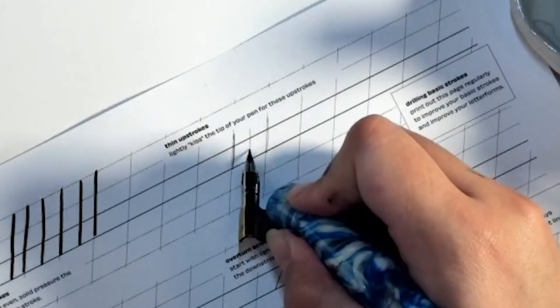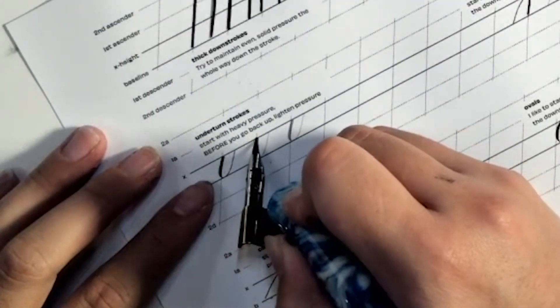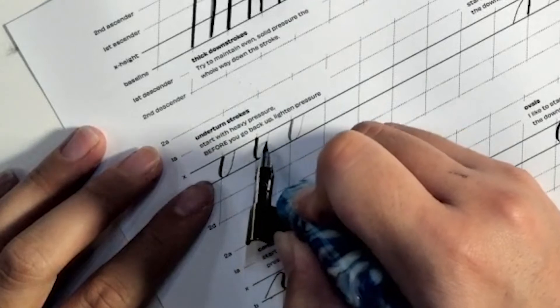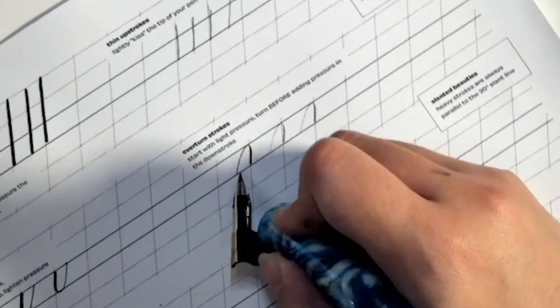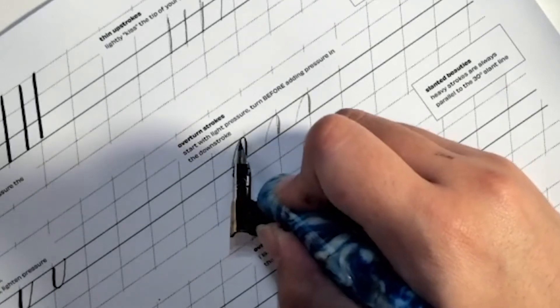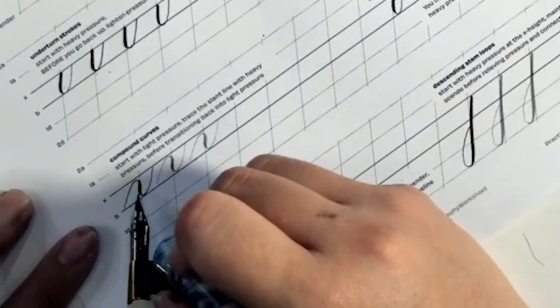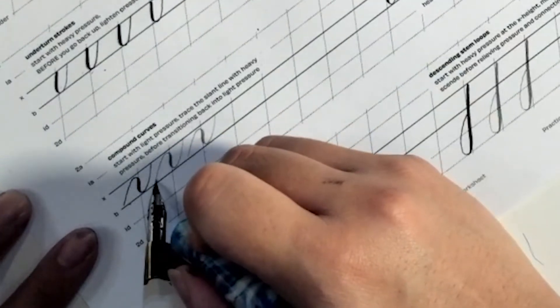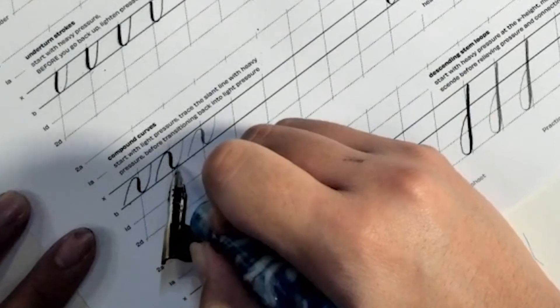Going to do a thin upstroke. Going to be an underturn stroke. So it's going to go heavy stroke and then going back up. This one is going to be an overturn stroke. So you're going light pressure up and then heavy pressure down. This one is a compound curve. You're just going to go light going up, heavy going down, light going up. So it's kind of like a backwards S for this one.